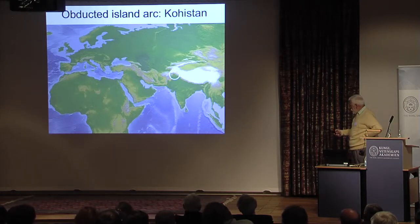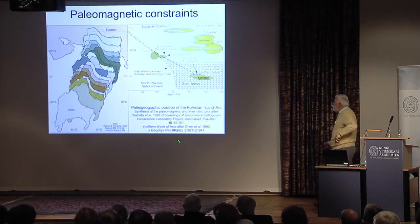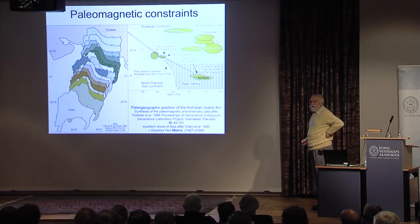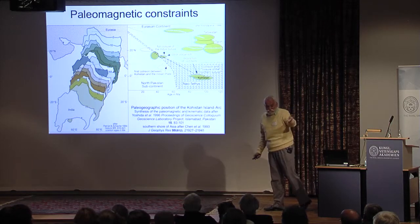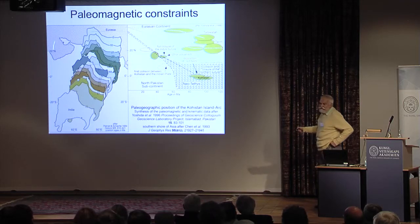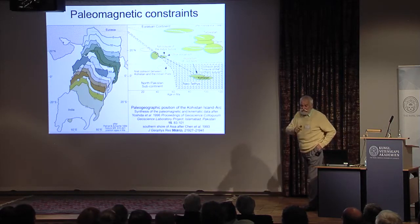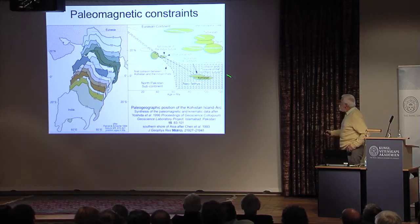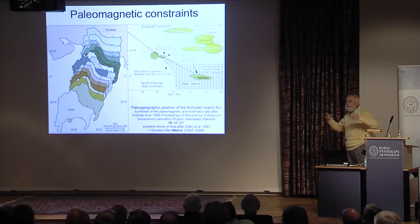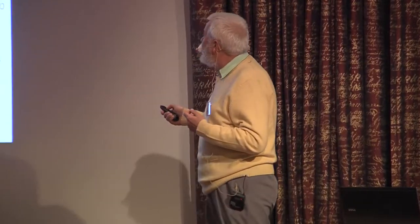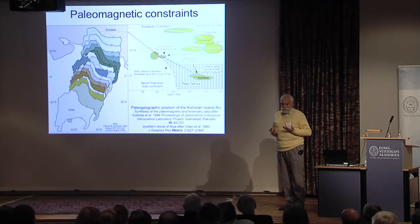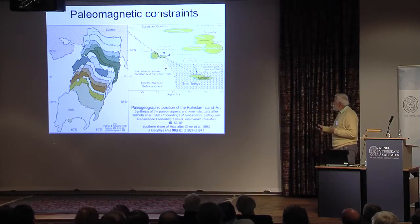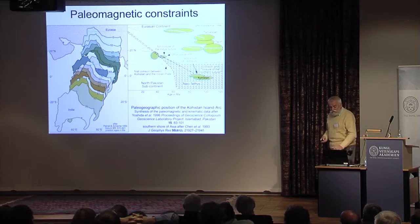So I went to Kohistan when it was still possible, and I did a lot of work with many people. What we know is that it's part of this collisional system. The paleomagnetic data shows that Kohistan was somewhere in the equatorial regions in the Cretaceous when the so-called red beds were deposited. At that time, the northern margin of Eurasia was further north, so we have to close the system.